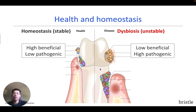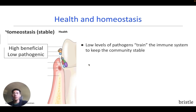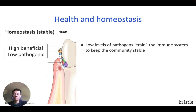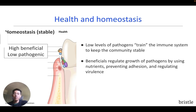Now let's talk about what happens in health. In healthy people, the community is stable over time in a state known as homeostasis. In homeostasis, a low level of inflammatory microbes are actually critical to health and help to maintain community stability. For example, microbes including pathogens that live at the gum line train the immune system to keep the community stable and prevent the overgrowth of pathogens. At the same time, a high abundance of beneficial microbes keeps the abundance of these pathogens low to maintain health and stability. The synergy between these microbes and the immune system is critical for stability and health.